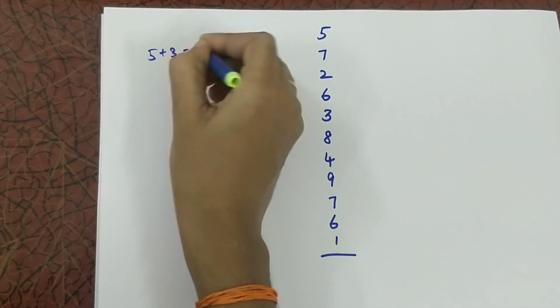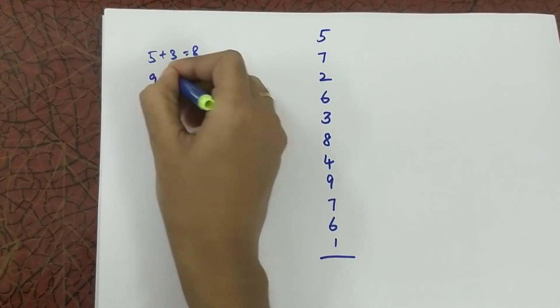Say for example, 5 plus 3 is 8, 9 plus 6 is 15.